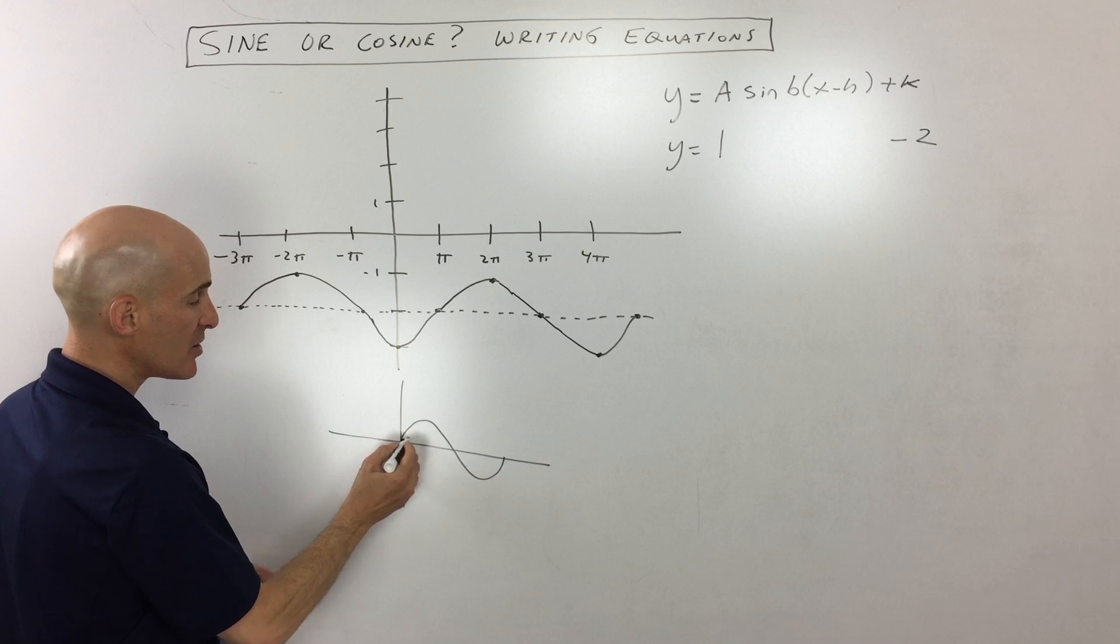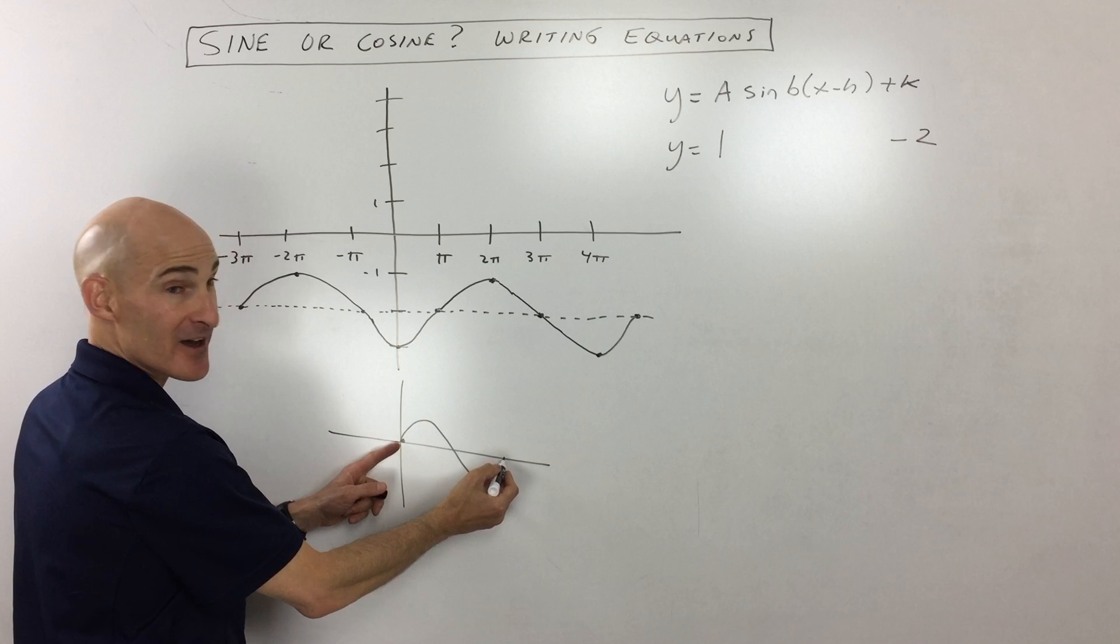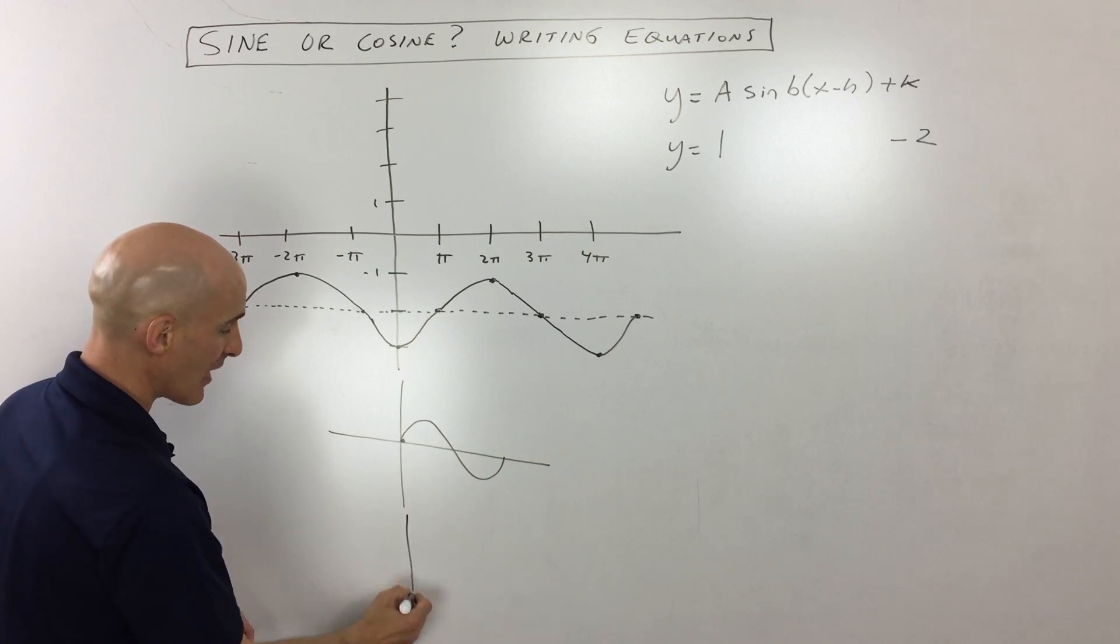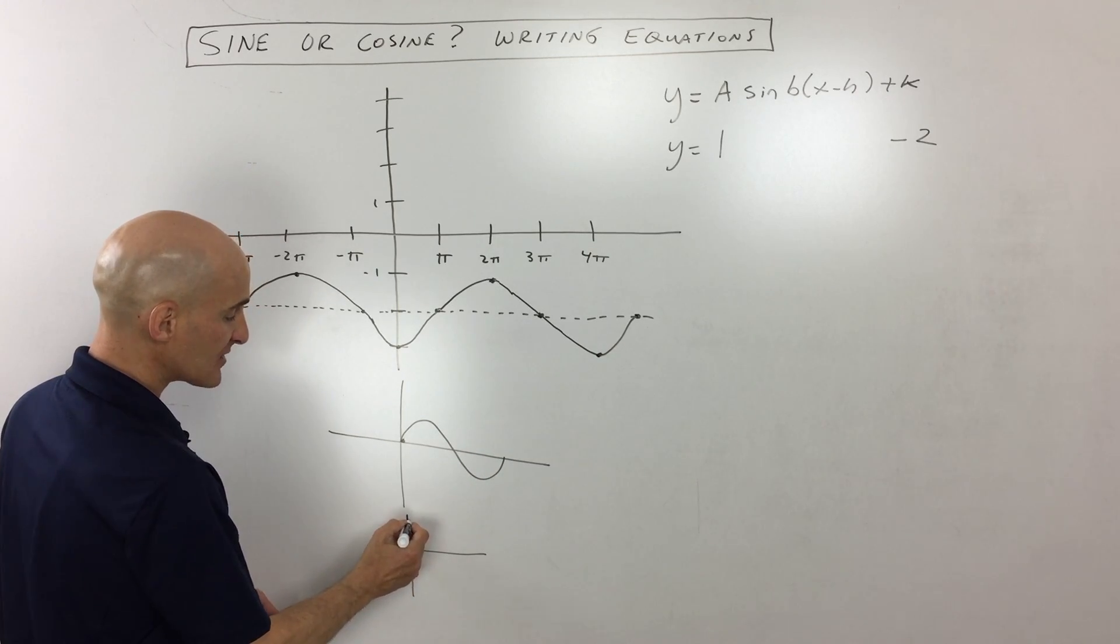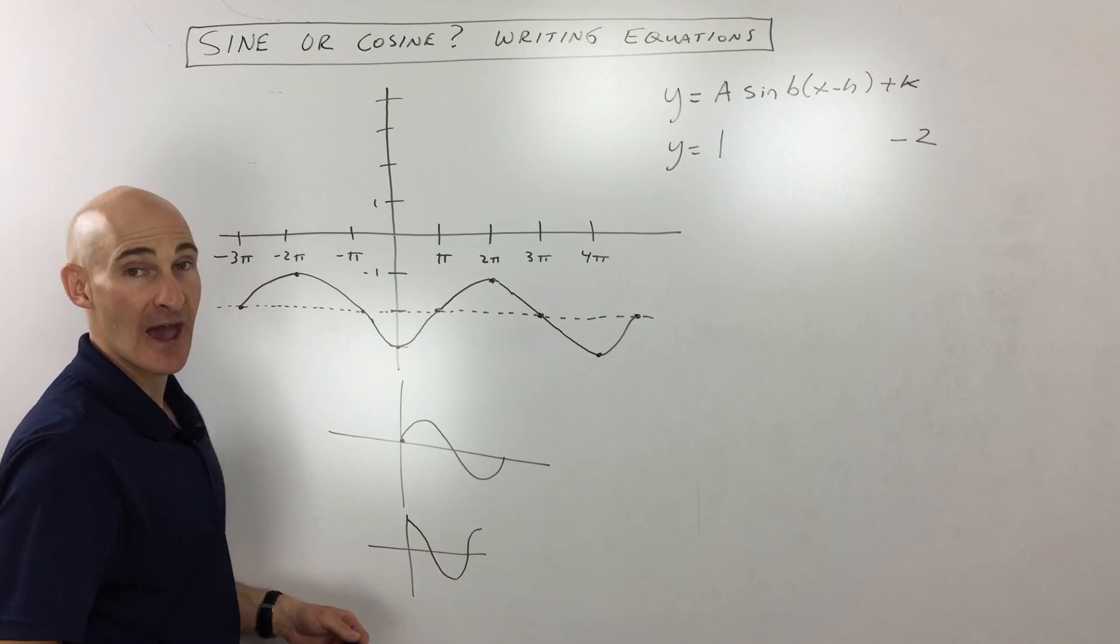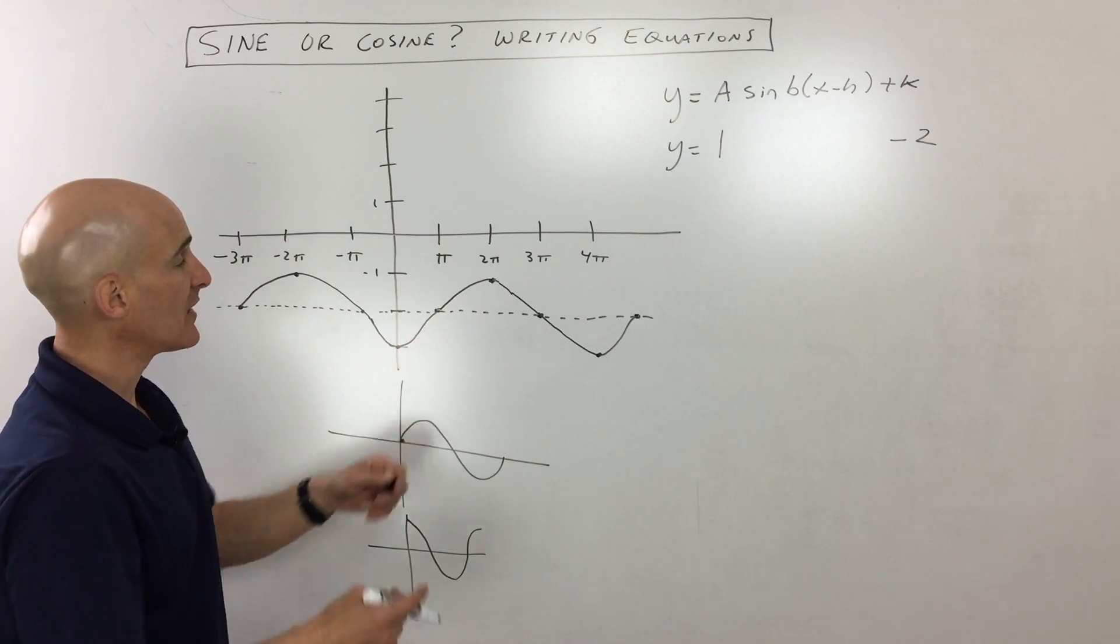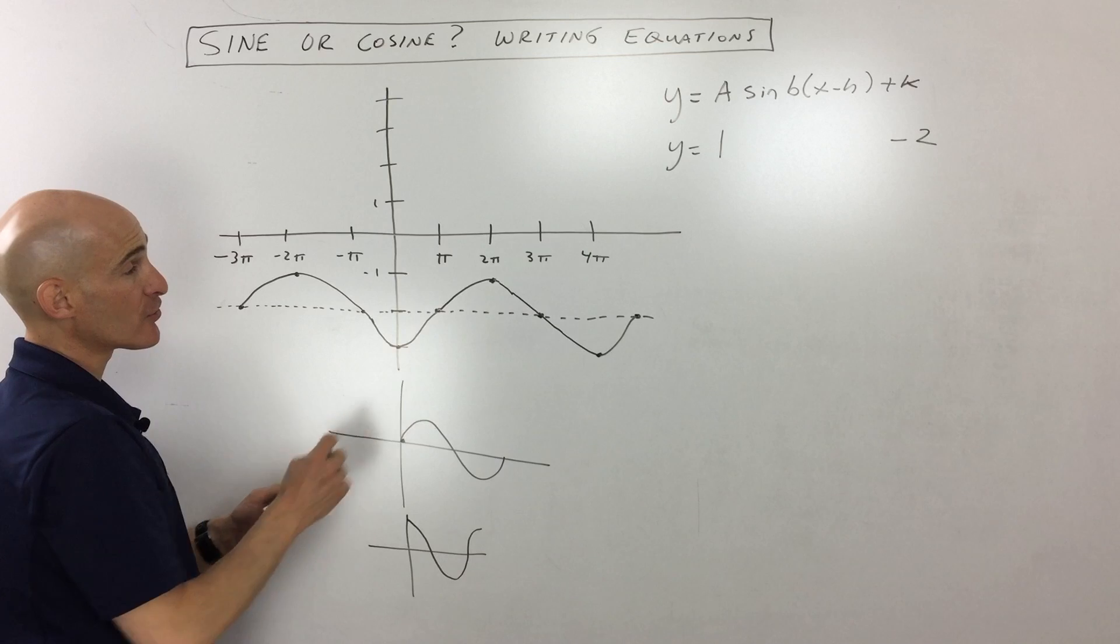Sine normally we think of as starting here at the origin, and then it goes up and then back to zero and down and back up like that. So that's the basic sine graph. Whereas a cosine graph starts at the maximum, goes through the zero, the minimum, back to the maximum like that. They both have a period of two pi.